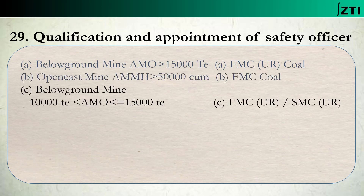C point dekhiye: agar underground mein, below ground mine mein average monthly output 10,000 ton se zyada hai lekin 15,000 ton ya phir usse kam hai, toh us mine mein jo safety officer appoint kiya ja sakta hai, aise person ko appoint kiya ja sakta hai jiske paas first class manager certificate ho not restricted to open cast, ya phir second class manager certificate not restricted to open cast bhi ho, toh woh person us below ground mine ke liye safety officer appoint kiye ja sakte hain.